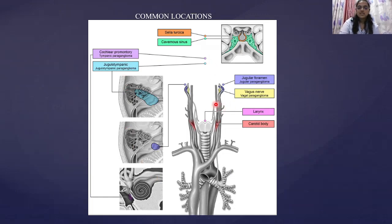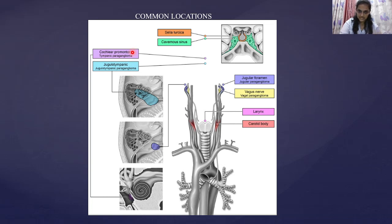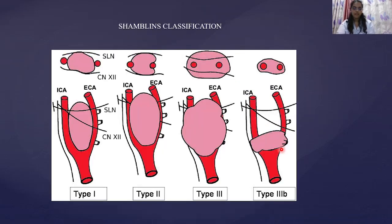Common locations of head and neck paragangliomas include the carotid body, vagus nerve, and jugular foramen. Jugulotympanic and tympanic paragangliomas — known as glomus tympanicum — can also occur. Uncommon locations include the sella turcica and cavernous sinus, which should also be looked for when encountering head and neck paragangliomas.